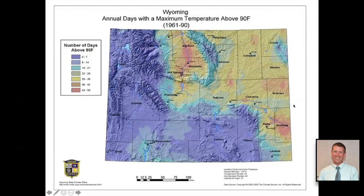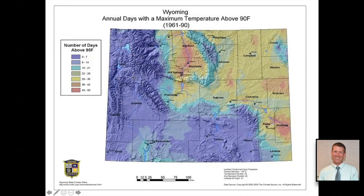This is another important map, especially when we start talking about warm and cool season vegetables. Here we can see how many days we can expect the maximum temperature to be above 90 degrees Fahrenheit. In the southern and far western parts of the state, we don't experience very many of those days — it might only be zero to seven days, maybe only two weeks above 90 degrees.